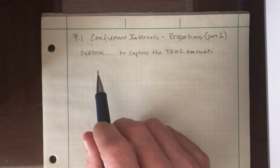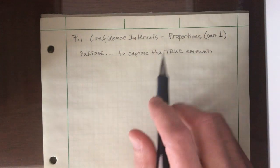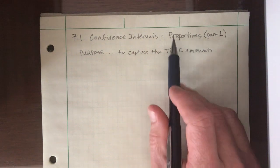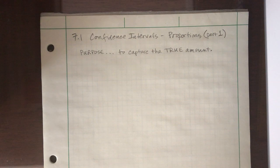There are two types of confidence intervals we're going to study this semester. The first type is going to revolve around proportions or percentages. In 7.2 we're going to learn about confidence intervals regarding means or averages.